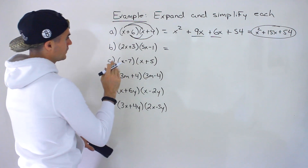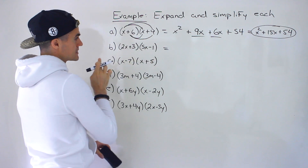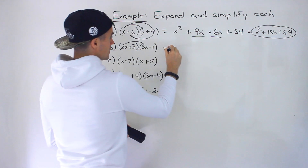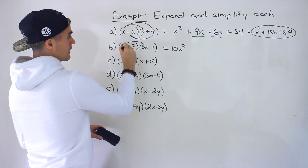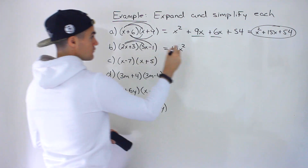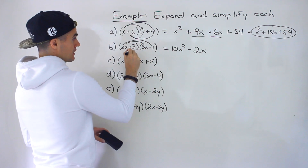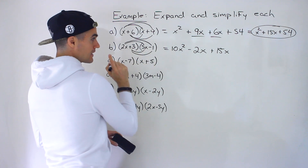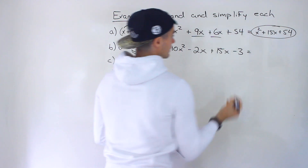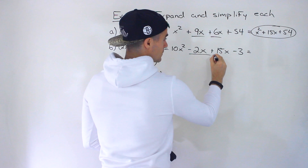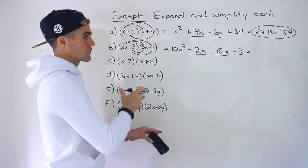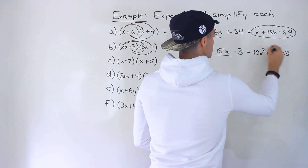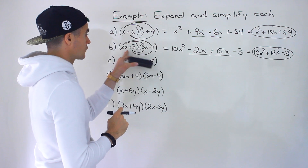Moving on to part b. Be careful here because we have coefficients in front of the x's and a negative sign — watch your signs. 2x times 5x gives us 10x squared. 2x times negative 1 gives us negative 2x. 3 times 5x gives us positive 15x, and 3 times negative 1 gives us negative 3. The like terms: 15x minus 2x gives us positive 13x. So the answer is 10x squared + 13x − 3.